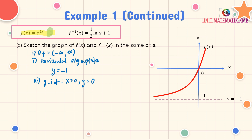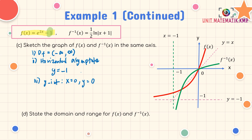Draw the straight line y = x. The horizontal asymptote at y = −1 becomes the vertical asymptote at x = −1 for the inverse. The intercept at the origin remains at the origin. Sketch the graph of f⁻¹(x). Domain of f equals range of f⁻¹: negative infinity to infinity. Range of f equals domain of f⁻¹: from −1 to infinity.